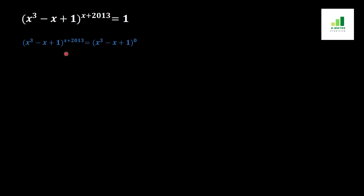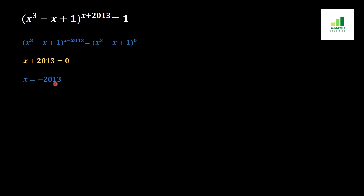Now we apply another basic rule of algebra: if the bases are equal, then their powers are also equal. Applying this rule, we get x + 2013 = 0. Moving 2013 to the other side, we get x = -2013. This is the first answer for x.